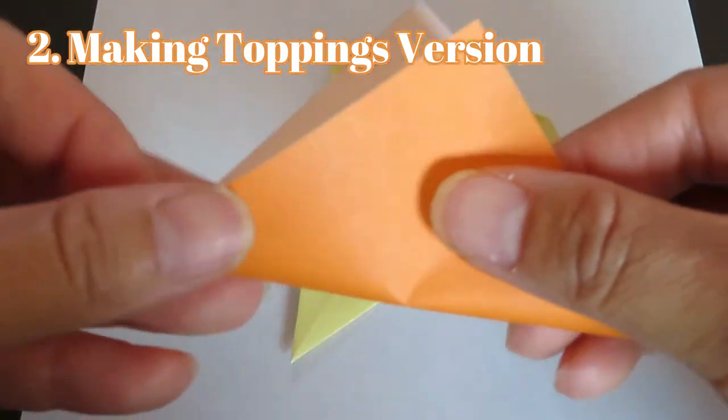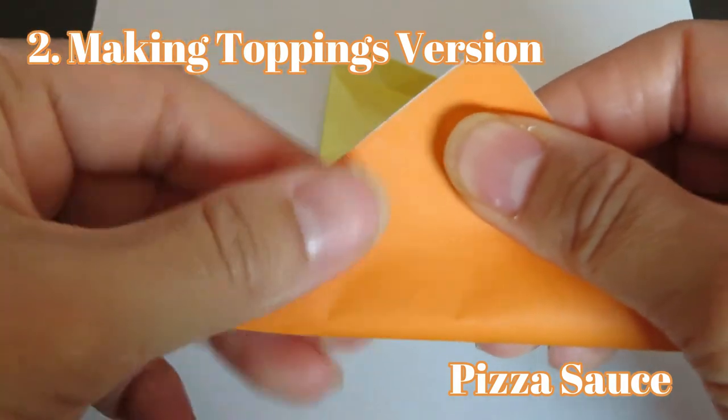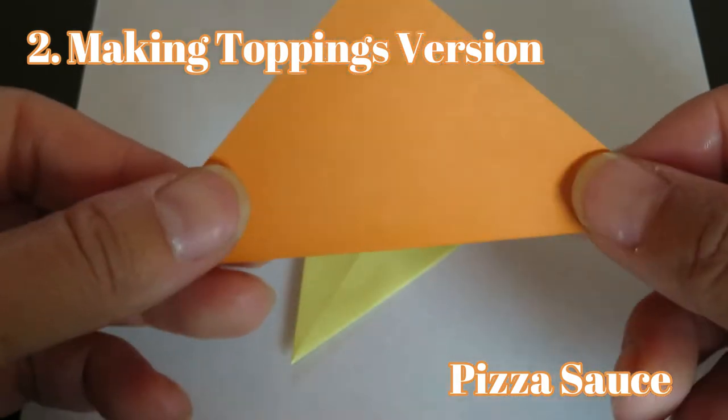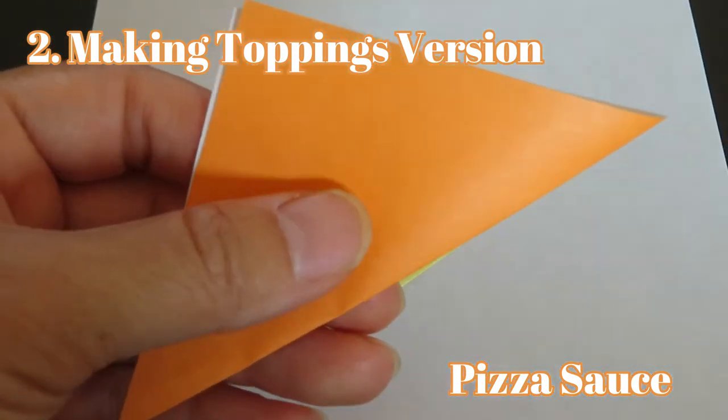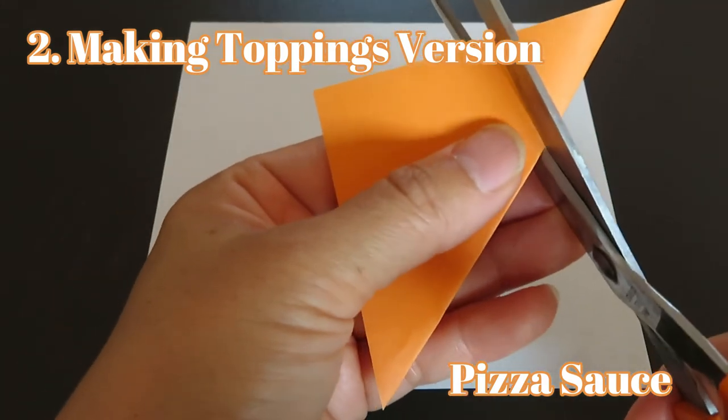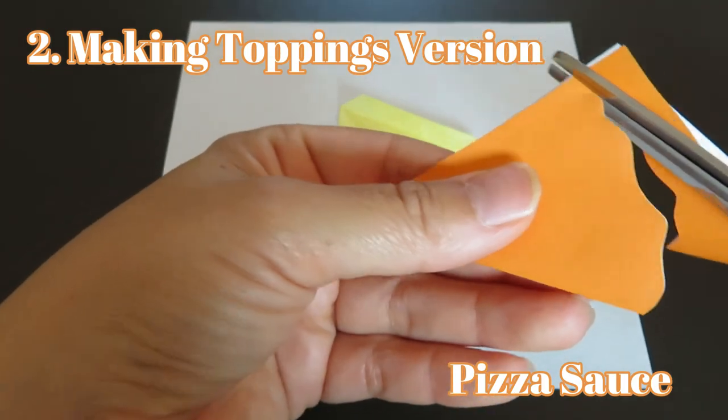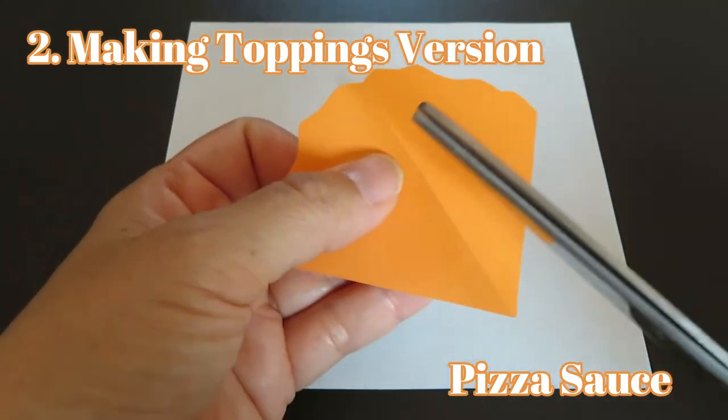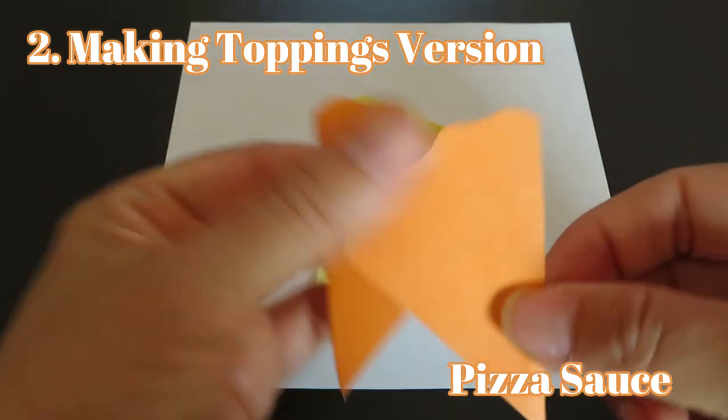First you choose the same size origami paper as pizza crust and fold into half like this. You can see the horizontal line in the middle. Then you are going to cut the paper wavy, not straight. And if you open the paper there is a line, so you're going to cut along the line. And this is the sauce so you can put it over the crust.